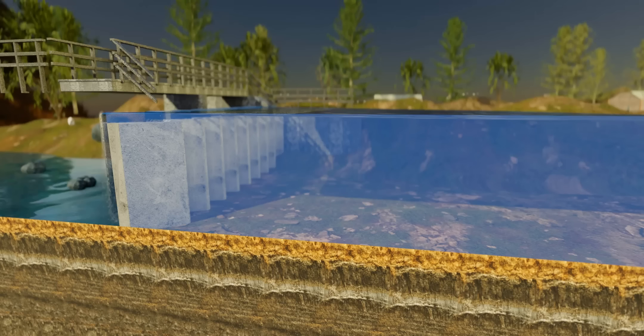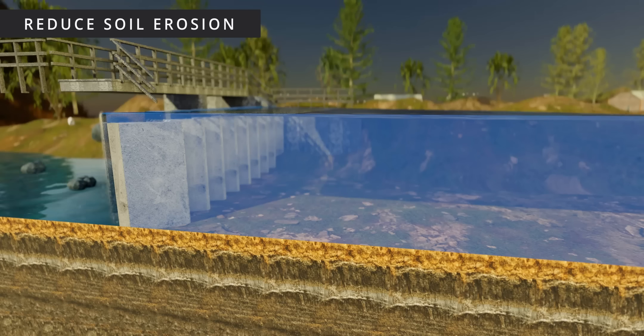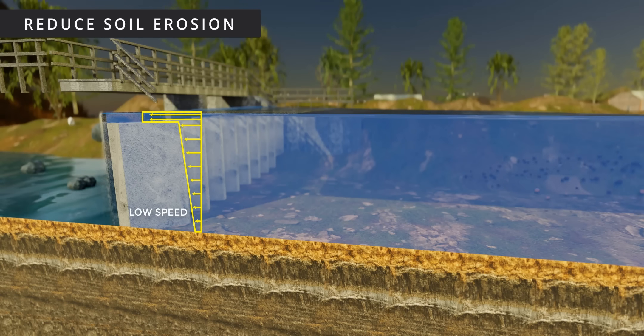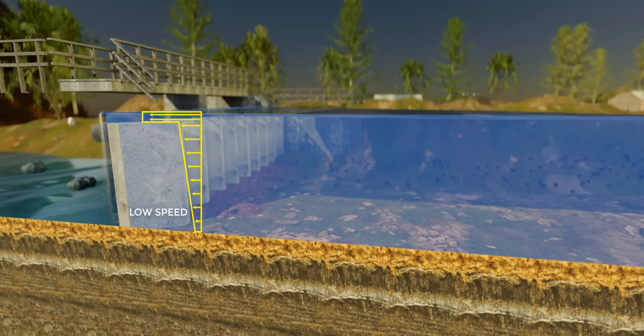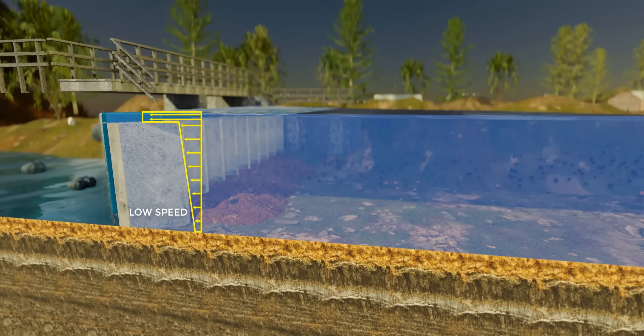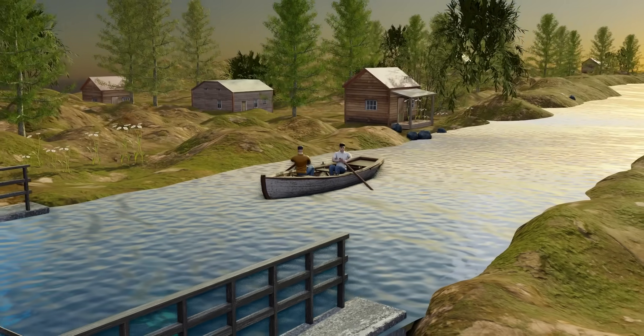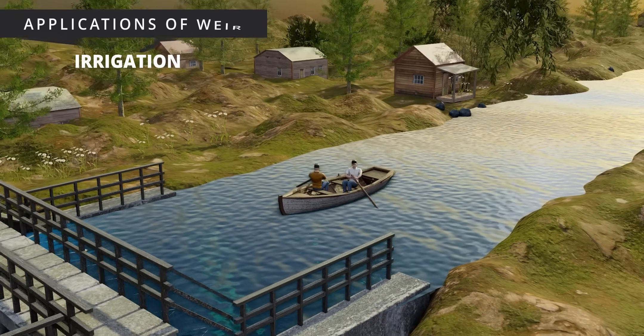Weirs are designed to control soil erosion, which is one of the main applications of a weir. By regulating the water flow, they can prevent excessive water runoff. Slowing down the flow of water reduces its erosive force, allowing sediment to settle rather than being carried away. The sediments are deposited behind the weir. Ultimately, by reducing the speed and force of water, weirs also assist in conserving soil.